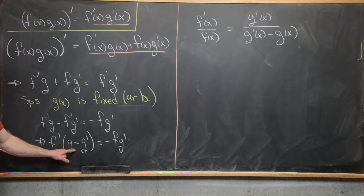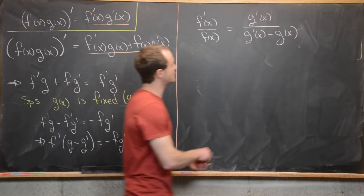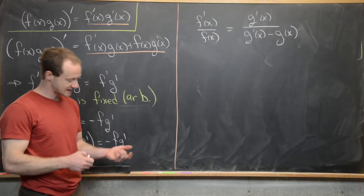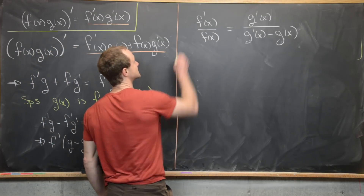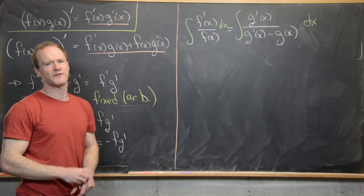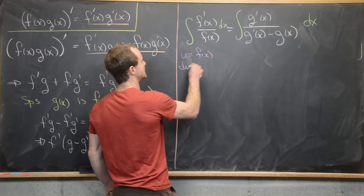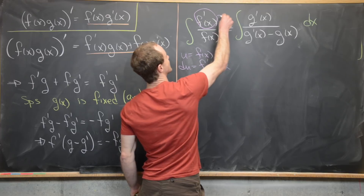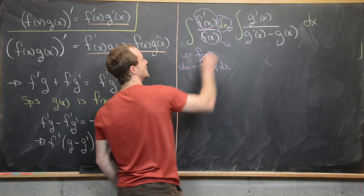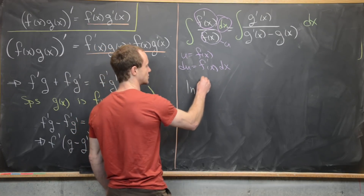We divided over and switched the order of the subtraction due to the minus sign. Now we have all the x-information about f on the left and all the information about g on the right. We can take the antiderivative of both sides with respect to x. On the left-hand side, using the substitution u = f(x), du = f'(x)dx, the antiderivative of f'/f dx becomes the natural log of f(x).